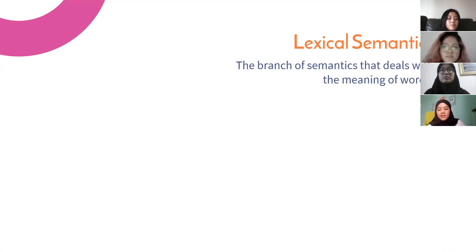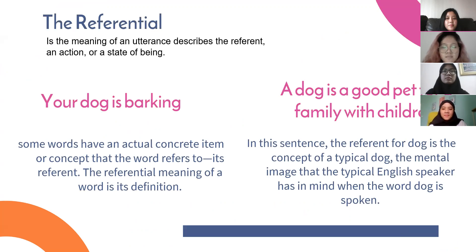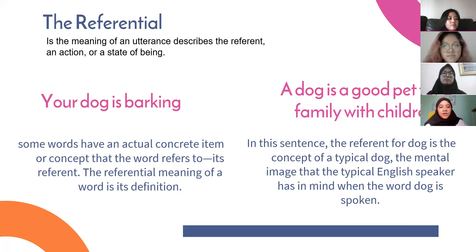The first topic is about lexical semantics. It is the branch of semantics that deals with the meaning of words. The first is the lexical meaning. It is the meaning of an utterance describing a deliverable, an action, or a state of being.